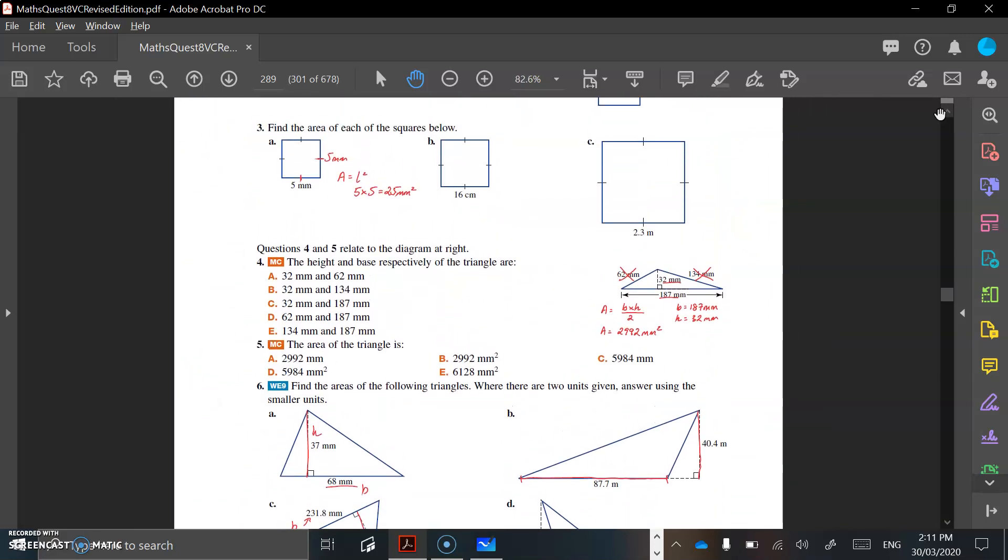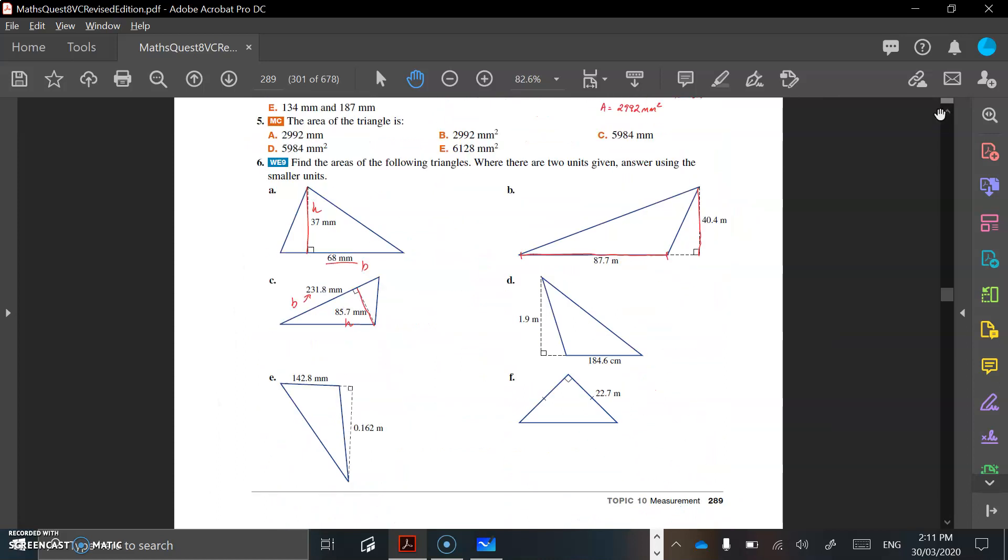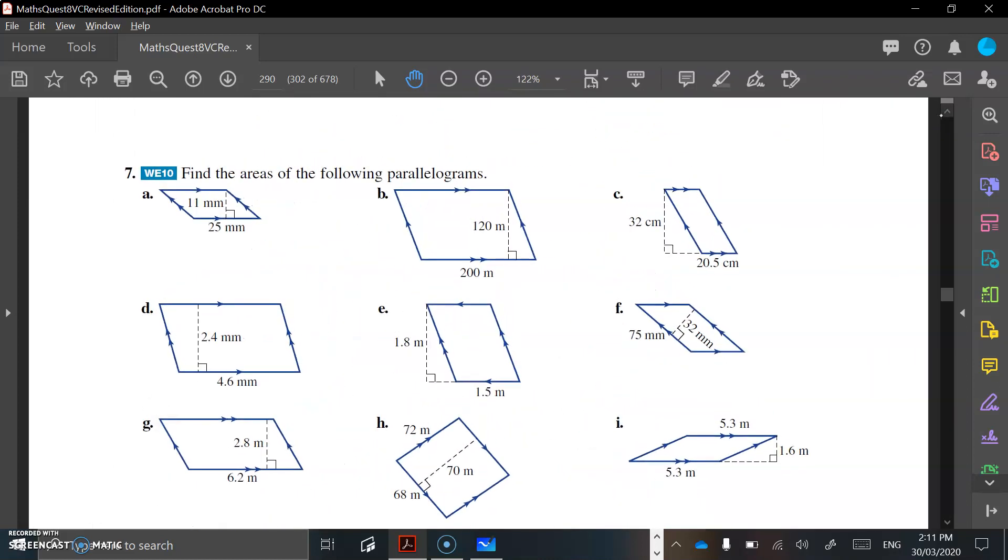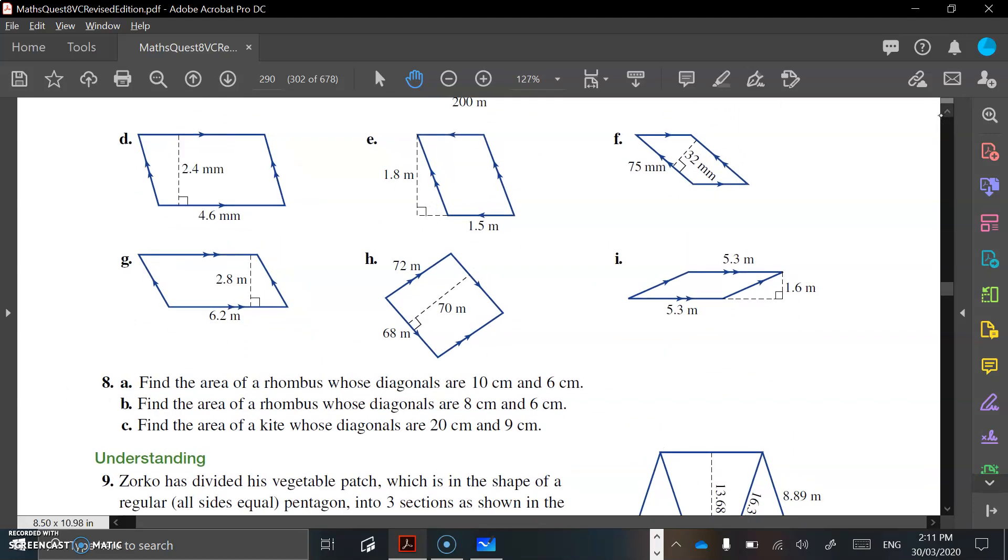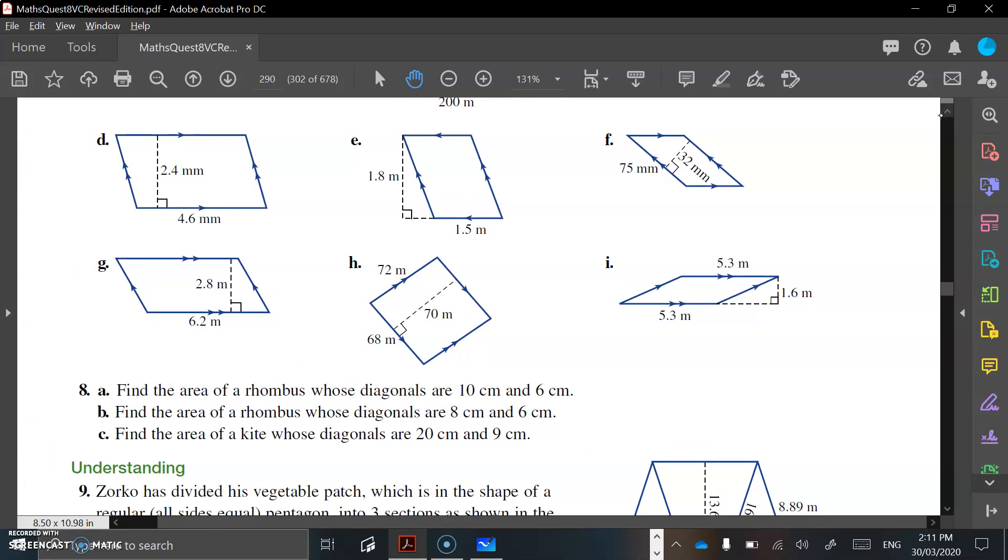Let's move on to our parallelograms, and then work on some rhombus as well. So let's look at G. We've got our base over there, which is 6.2, and we've got our height, which is 2.8.